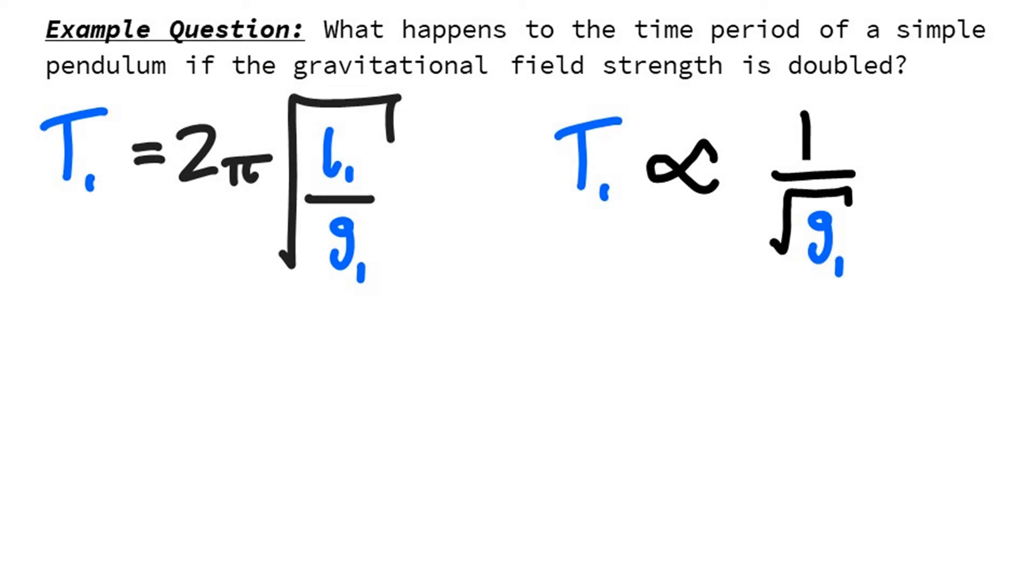Now all that's left to do is to apply the same procedure as we did for the Newton's Second Law example. T2 divided by T1 is equal to root g1 over root g2. Let's move T1 over to the other side. There we go. And start substituting in our known quantities.